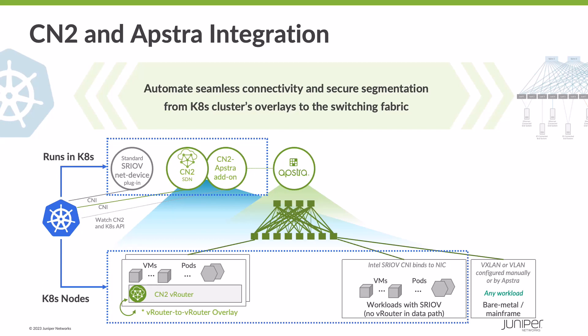In this new integration, we have seamlessly and automatically built connectivity between the switching fabric managed by AppStra — which is a multi-vendor switching fabric management tool — and the CN2 SDN for Kubernetes. This allows you to seamlessly extend the overlays inside of the cluster to, for example, the EVPN VXLAN overlays inside of the physical switching fabric.